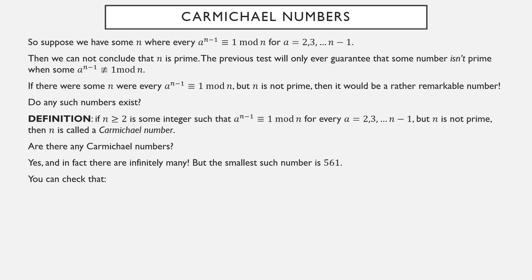So what you could do, given sufficient motivation, is check 2 to the 560th is equivalent to 1 mod 561, 3 to the 560th is equivalent to 1 mod 561, 4 to the 560th is equivalent to 1 mod 561, all the way until 560 to the 560th is equivalent to 1 mod 561. These will all be true, but 561 is definitely not prime. It's divisible by 3, 11, and 17. It's their product. So we have a number here where the Fermat primality test never told me that the number wasn't prime, but it still doesn't mean that the number is prime.